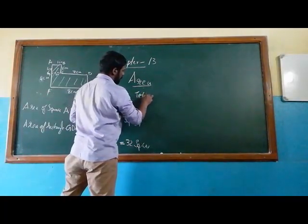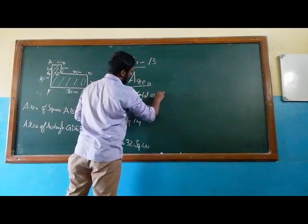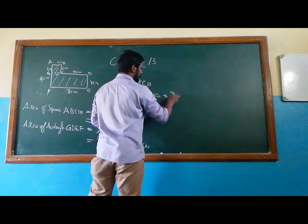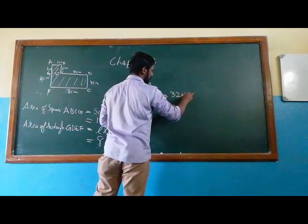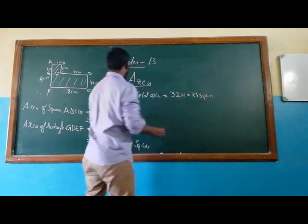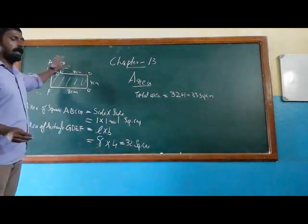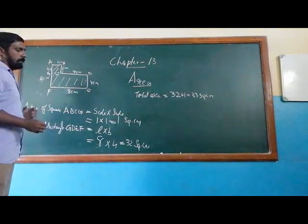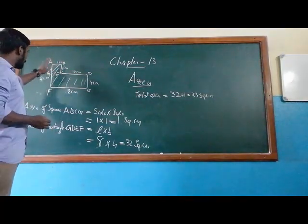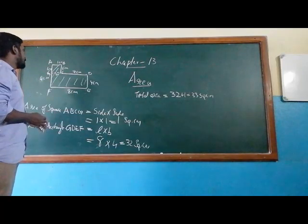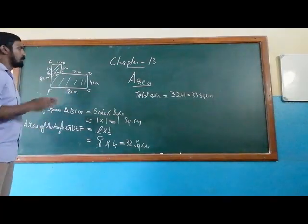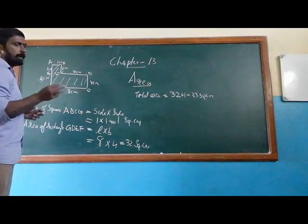So now let us see the total area. The total area is equal to the area of the square plus the area of the rectangle, that is 1 square centimeter plus 32 square centimeters, which equals 33 square centimeters. That is the total area of this shape. We have to divide combined shapes into different simple shapes. This is one of the easiest methods; there are some more difficult methods in the text that we will discuss.